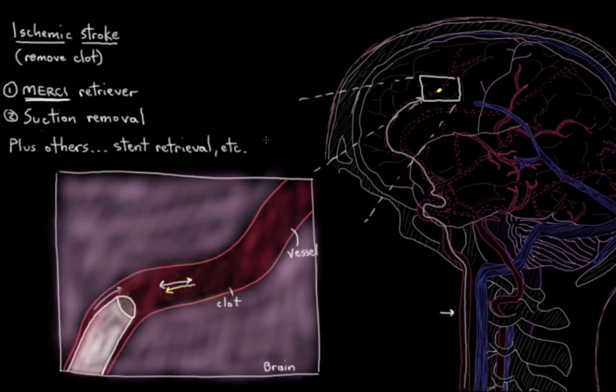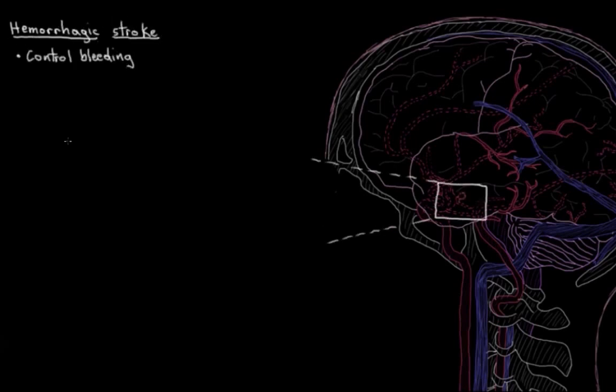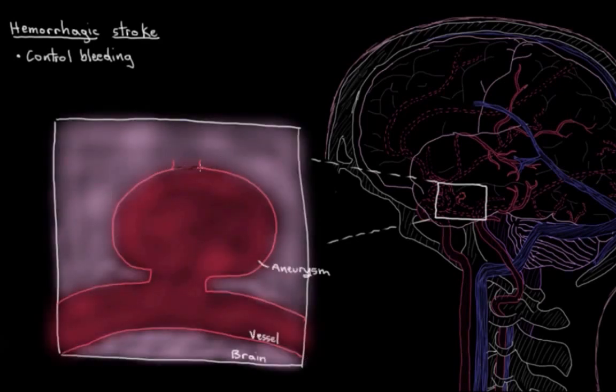So those two that we just talked about, those are treatments for ischemic strokes. But if our surgeon was treating a hemorrhagic stroke where one of the major goals is to control the bleeding, he might be doing some other things, some different procedures. So there's one called aneurysm clipping. And what that is is, well we know that if an aneurysm in the brain bursts or ruptures, then it'll start to spill blood out into the brain space.